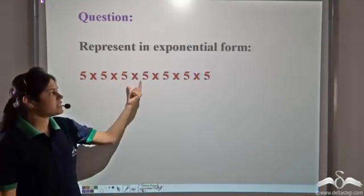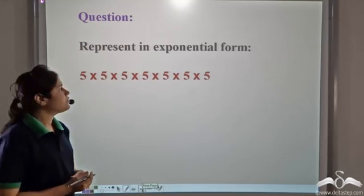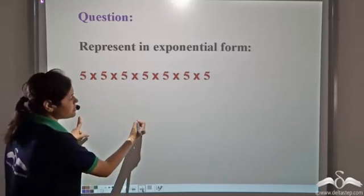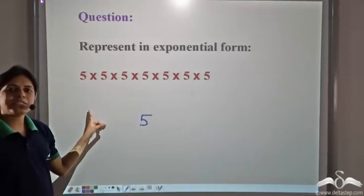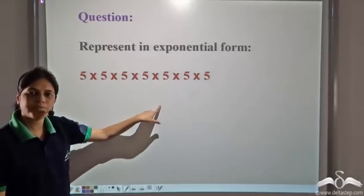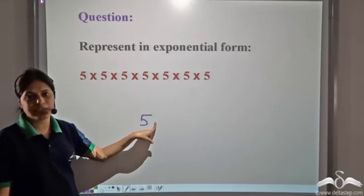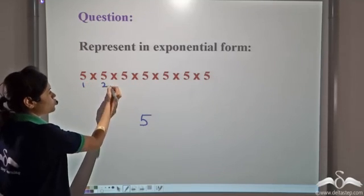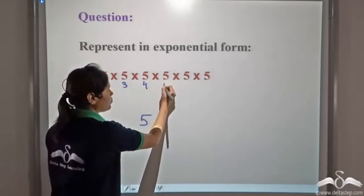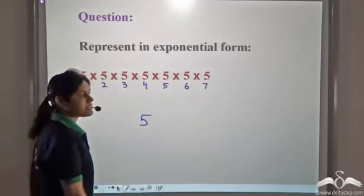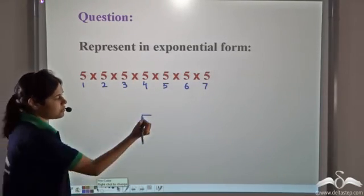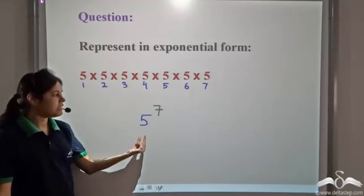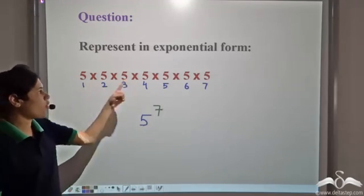So can you represent this in exponential form? We see that 5 is being multiplied, so first, 5 is the base. Next we need to find the exponent, which is the number of times 5 is multiplied. Counting: 5 is multiplied 7 times. So this is 5 to the power 7, or 5 raised to the power 7. This is the correct representation of this number.